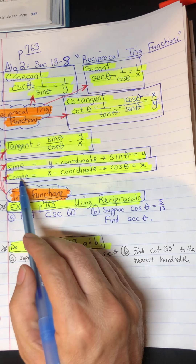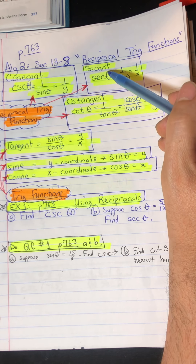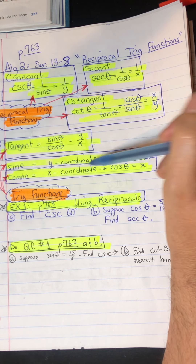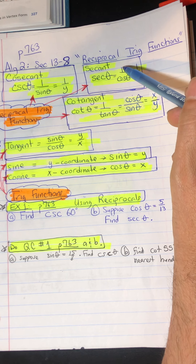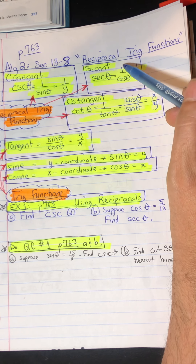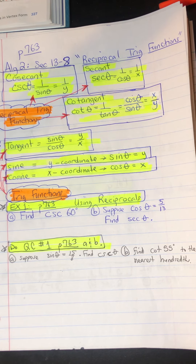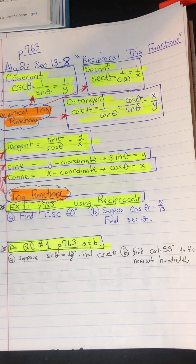The reciprocal of cosine is secant. Secant is 1 over cosine, and remember cosine is the x-coordinate, so the reciprocal of cosine is secant. Secant equals 1 over cosine, which is 1 over x. To find secant, you first find cosine and then take the reciprocal of the x-coordinate on the unit circle.